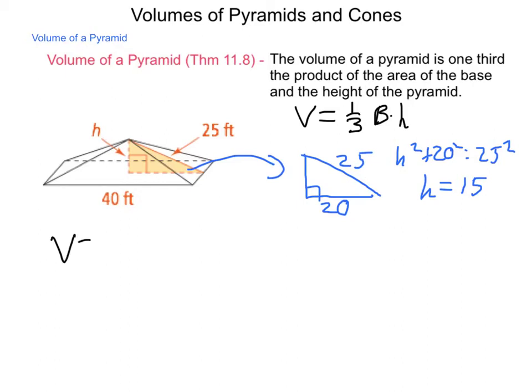So V equals one-third the base area times the height. So that's going to be one-third of base area is 40 squared, and the height we found to be 15.